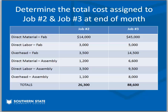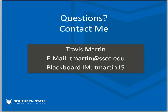That's pretty much how a job order costing system works. We have separate jobs, we account for them separately, and gather costs up separately. We apply overhead similarly to what we did in ABC costing in chapter four — that's why we studied that before doing job order costing. That was a lot to take in. If you have any questions, please send me an email or get in touch however you want and we'll try to walk you through it. Good luck on your problems and let me know if you're running into any issues.